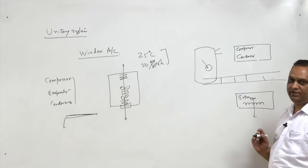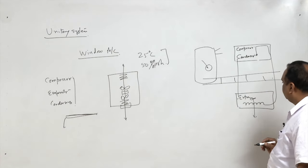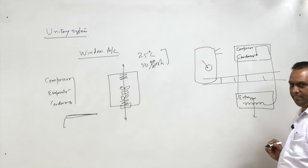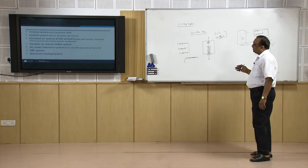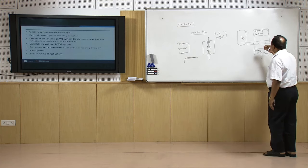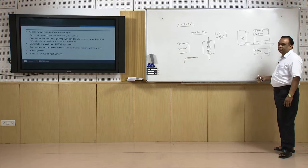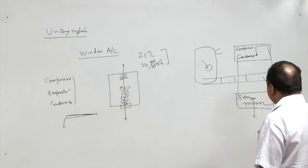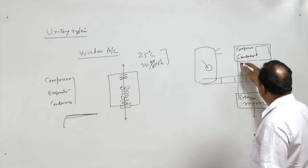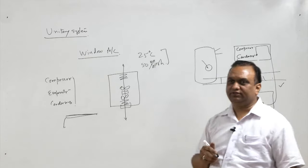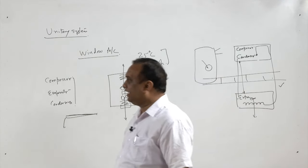The refrigeration cycle remains the same: vapor from the evaporator goes to the compressor, then to the condenser, then to the expansion device, and back to the evaporator. This unit is a relatively silent type because the compressor — the major source of noise — is housed outside the building. A precaution must be taken that the distance between the two units should not exceed 20 meters, as a large distance causes pressure drop in the pipe, affecting system performance.